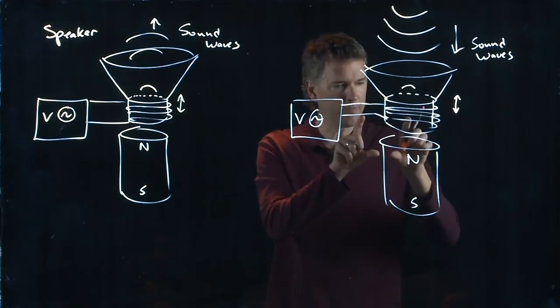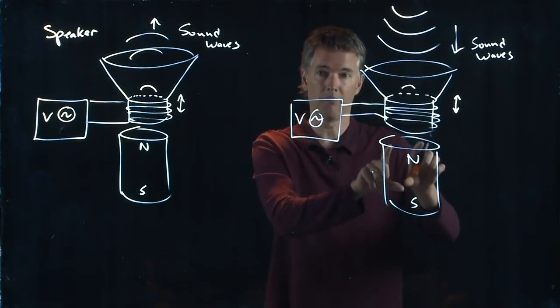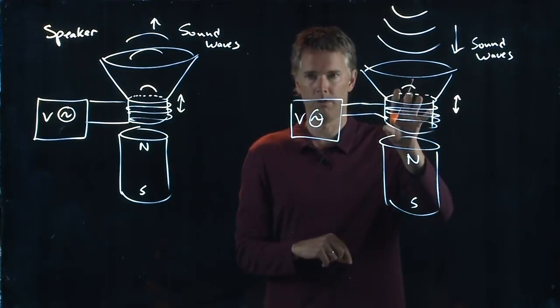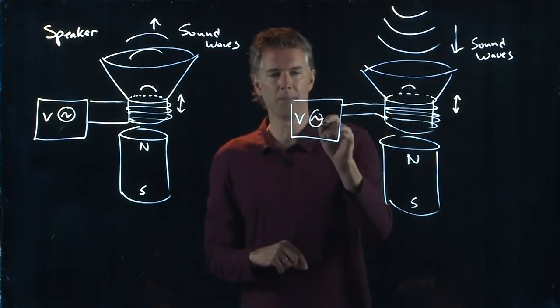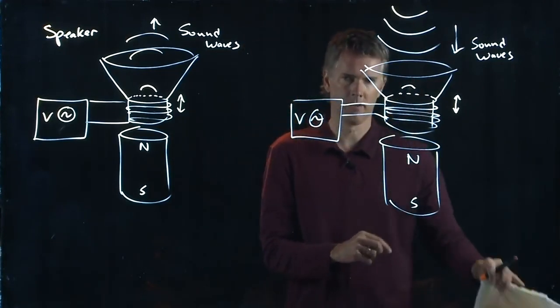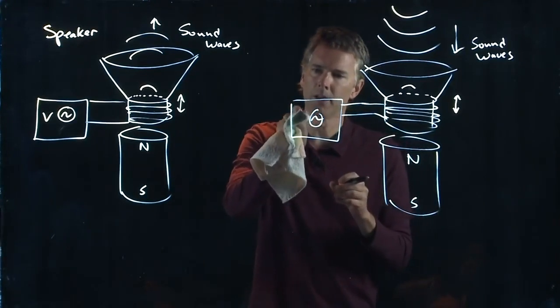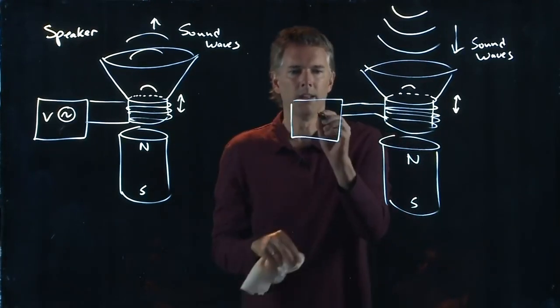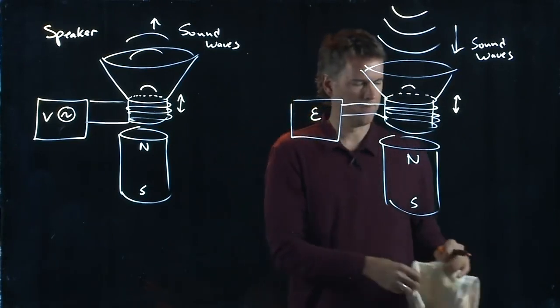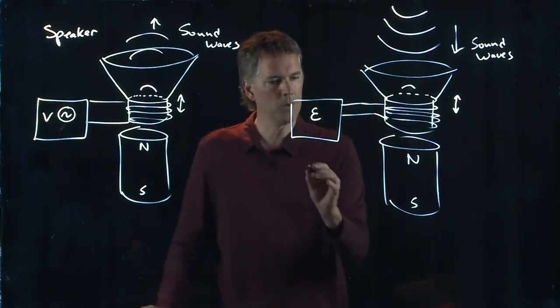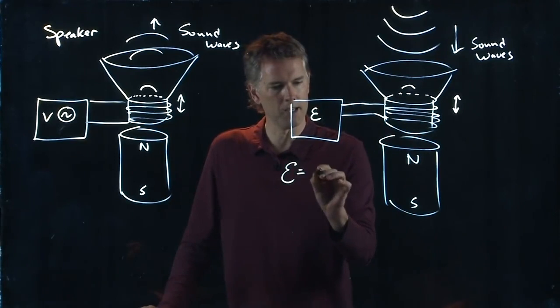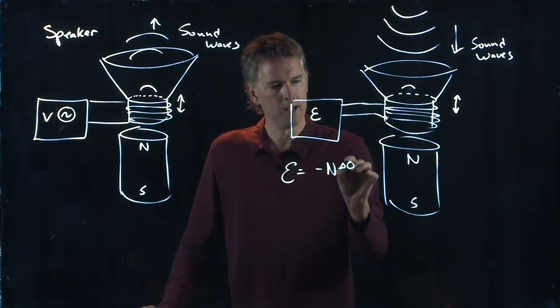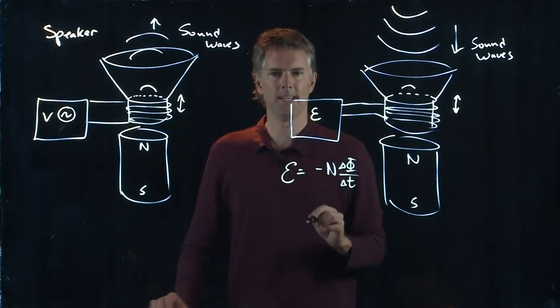And if there is a changing flux through the coil, then there is an EMF that is generated here. And so let's not label this phi. Let's label this EMF epsilon. And we know what that is. EMF epsilon is negative N delta phi over delta T.